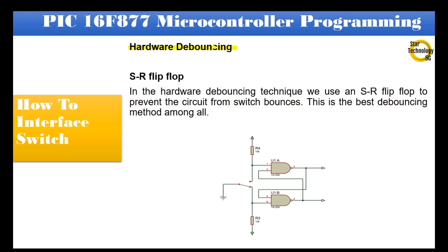Hardware debouncing — SR flip-flop: In the hardware debouncing technique we use an SR flip-flop to prevent the circuit from switch bounces. This is the best debouncing method among all. This circuit consists of two NAND gates forming an SR flip-flop. Whenever the toggle switch moves to the A side, the output logic gets high. Whenever the switch is moving between contacts to create the bounce, the flip-flop maintains the output because zero is fed back from the output of the NAND gates.